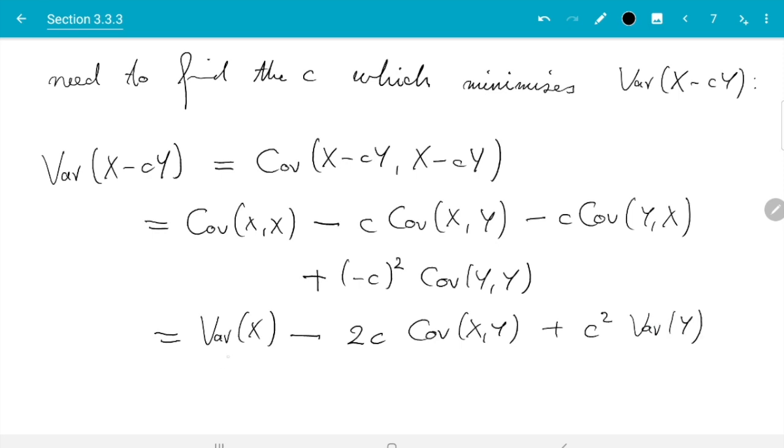And now all of these variances and covariances are fixed. Variance x, variance y and covariance x and y we can do nothing about. But the thing we can change is c. So we need to look at that as a function of c and ask where is the minimum. So let's define that to be v of c and then we need the minimum with respect to c and we do that by taking derivatives.